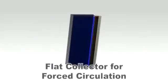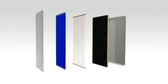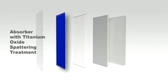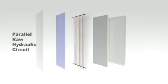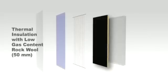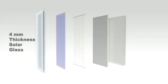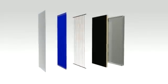The flat plate solar collector for forced circulation systems has a surface of 2 square meters, absorber with titanium oxide treatment, parallel raw hydraulic circuit ultrasonic welded and high rock wool thermal insulation. This collector is particularly recommended for domestic use.